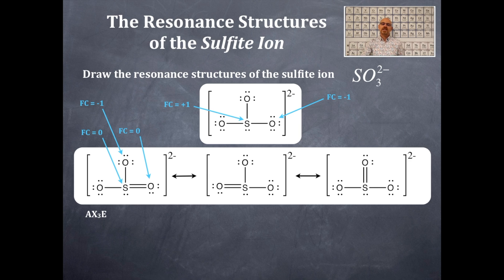All of these structures are AX3E. That is three bonding, one non-bonding. It's trigonal pyramidal in shape. And that's less than 109.5, close to 107.